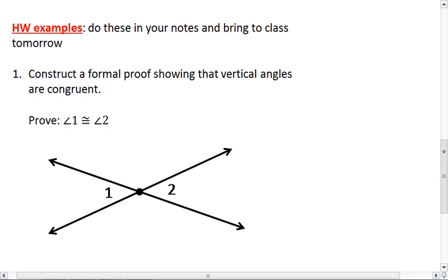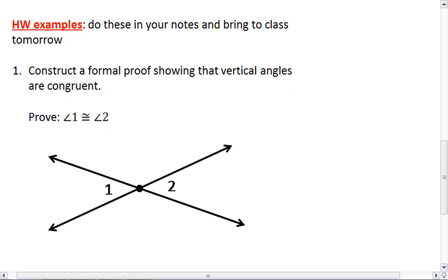For your homework, we've already talked a lot about vertical angles. We showed an informal proof in class. I want you now to construct a formal proof that shows vertical angles are congruent. So given the drawing below, you need to prove that angle 1 is congruent to angle 2.